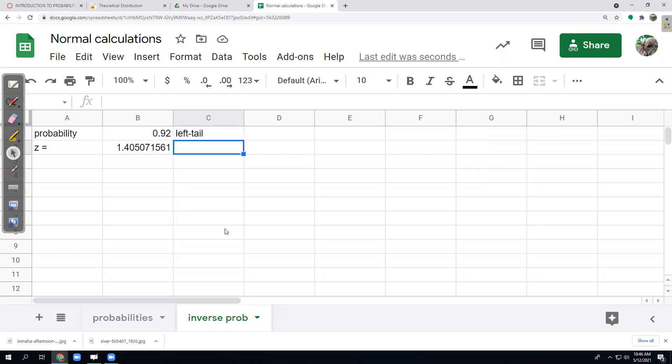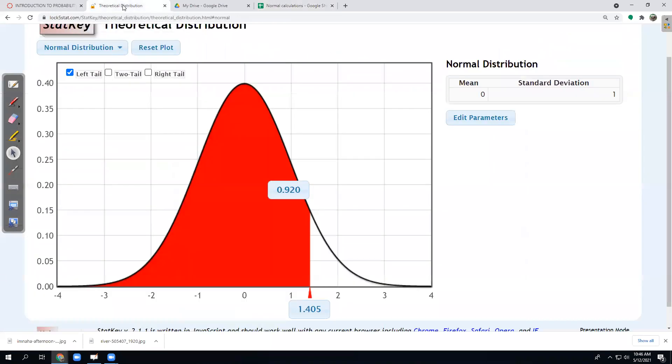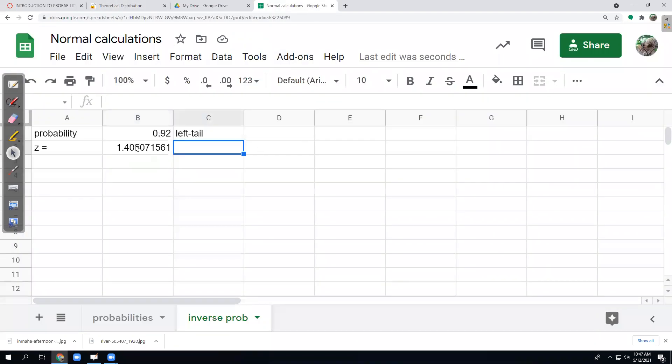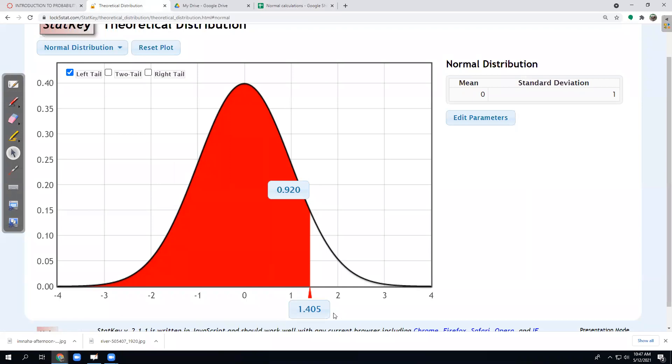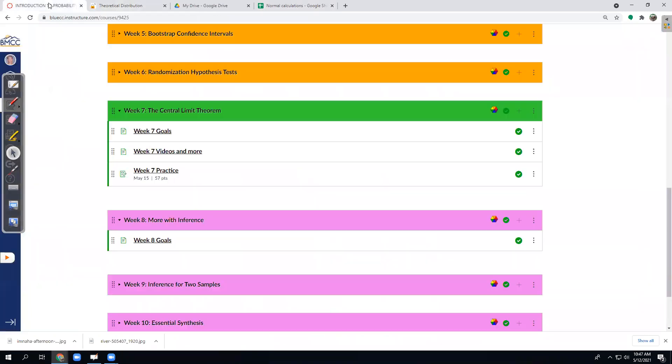So again, spreadsheet's a little trickier, but it gives us more accuracy. StatKey's a little easier, and it gives us a picture. Pros and cons. And again, the spreadsheet agrees with StatKey. And they always will agree, the spreadsheet just has more decimals.